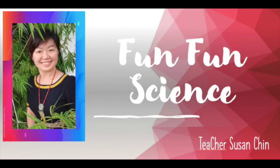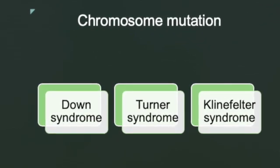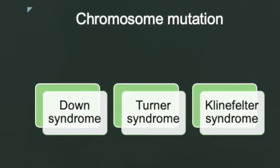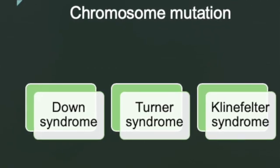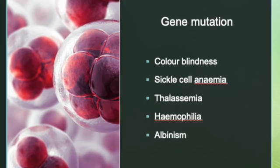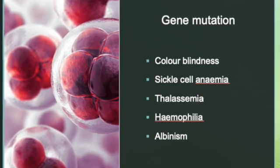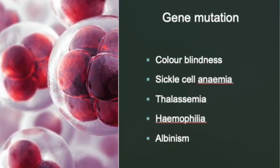Hello students of Form 4, I'm Teacher Susan. I would like to share a video to show you how to do the PPL project. We have two types of mutation: number one is chromosome mutation, and number two is gene mutation. You just need to choose any one of the mutations and look for all the information regarding the mutation disease that you choose.